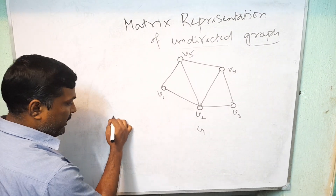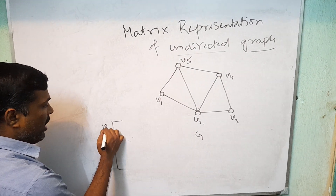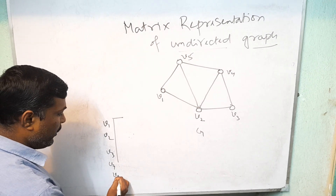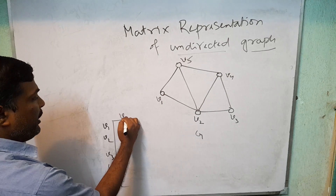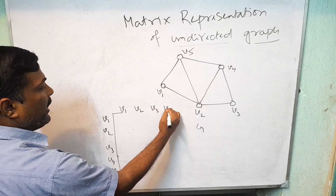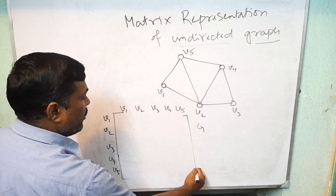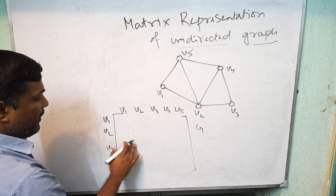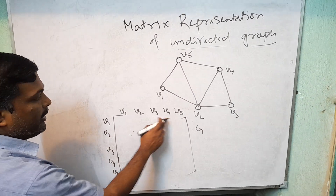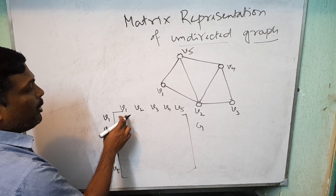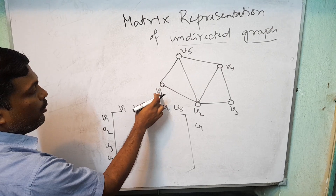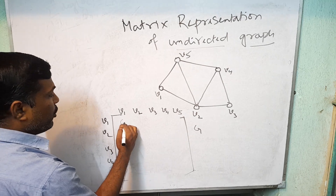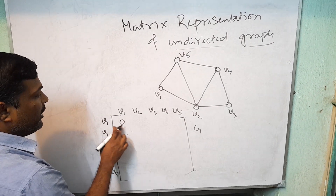See the matrix. Write V1, V2, V3, V4, V5 for rows and V1, V2, V3, V4, V5 for columns. This graph has 5 vertices, so the corresponding adjacency matrix is a square matrix of order 5. Now, see V1 to V1 — is there any edge between V1 and V1? This graph has no self-loop, so it is 0.